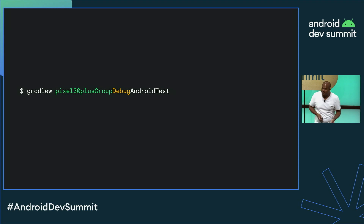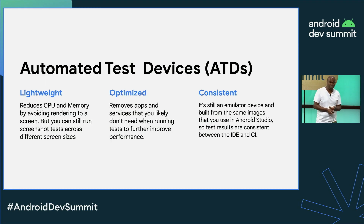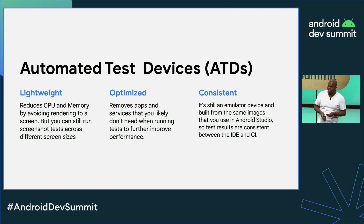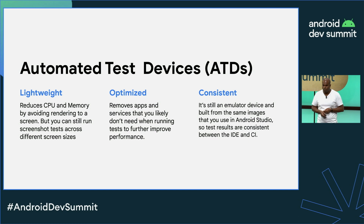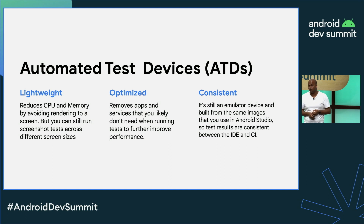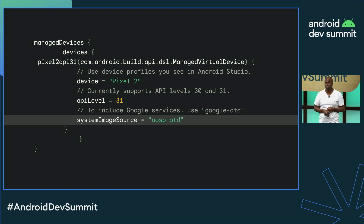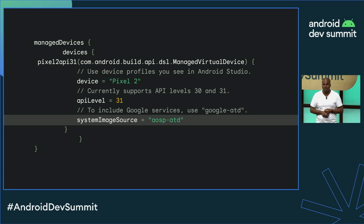The more devices you add, you're going to start hitting your memory and CPU limit. We're trying to help with that using something called automated test devices. This is a new type of device image which strips out a lot of the apps, overhead, and background processes that developers typically don't need when running tests on CI. This can lead to significant reduction in memory and CPU usage. It's just as easy as targeting that image type — AOSP-ATD. We currently support API levels 30 and 31, and we are adding more along the way.